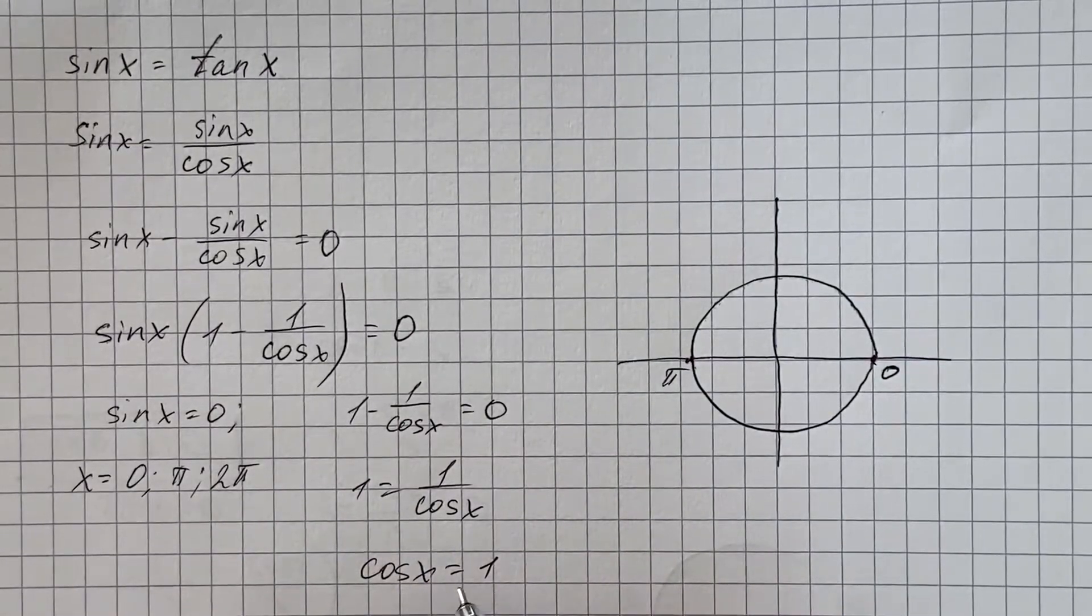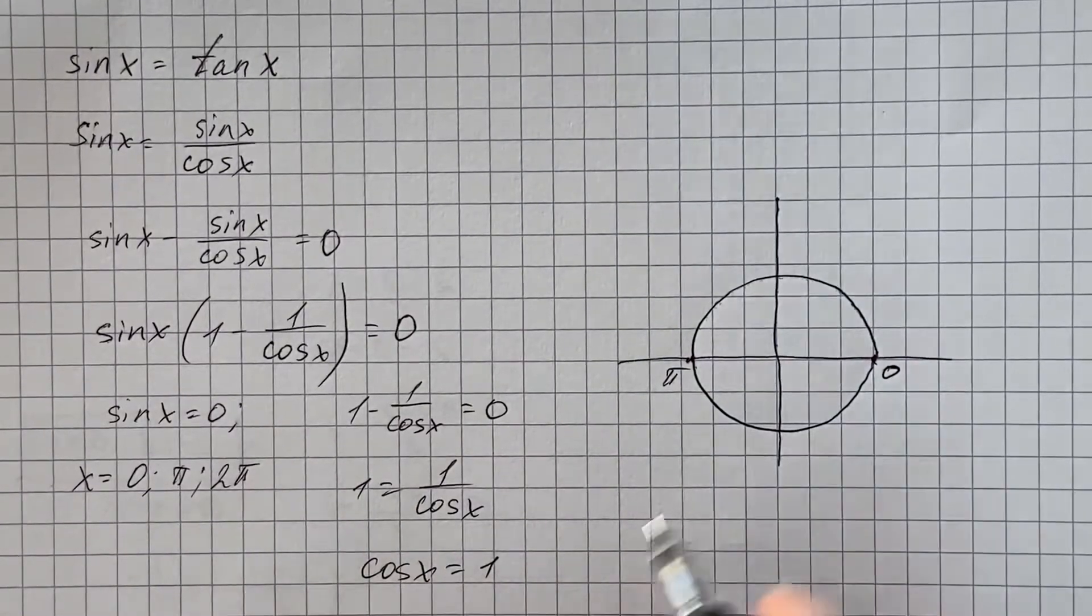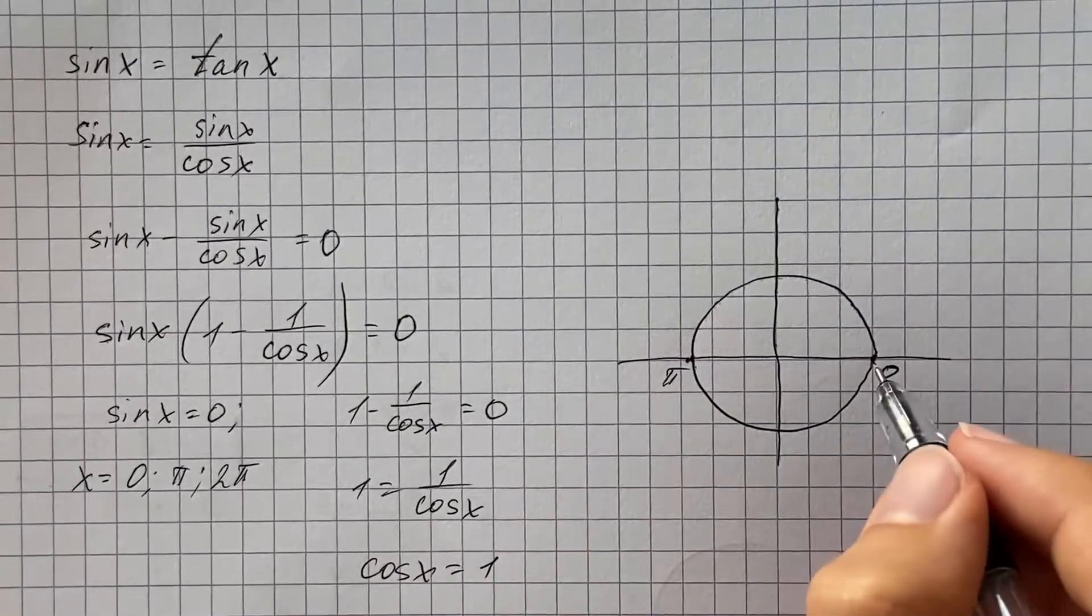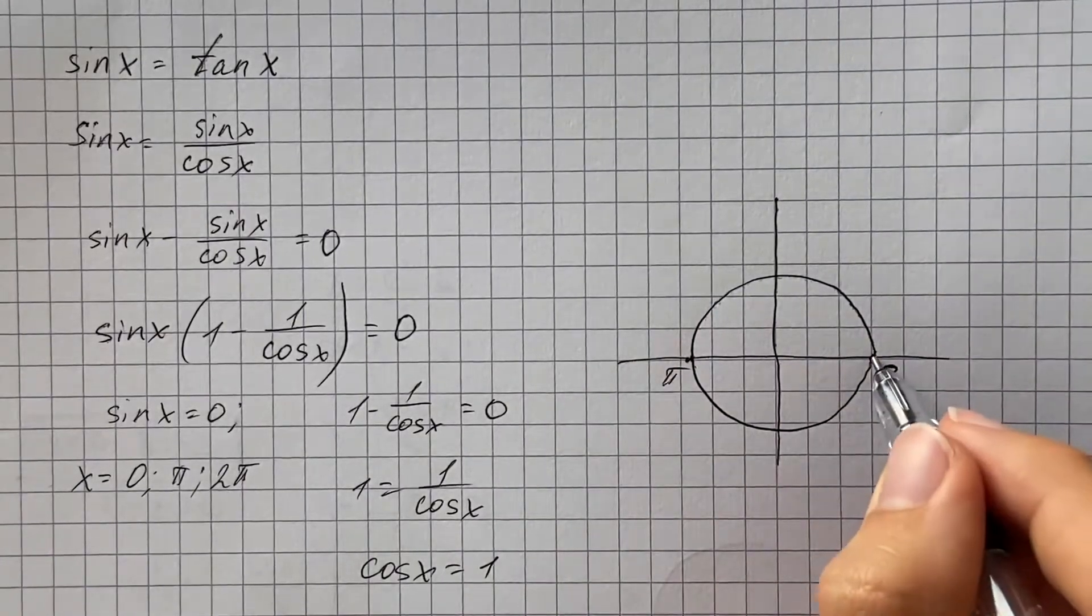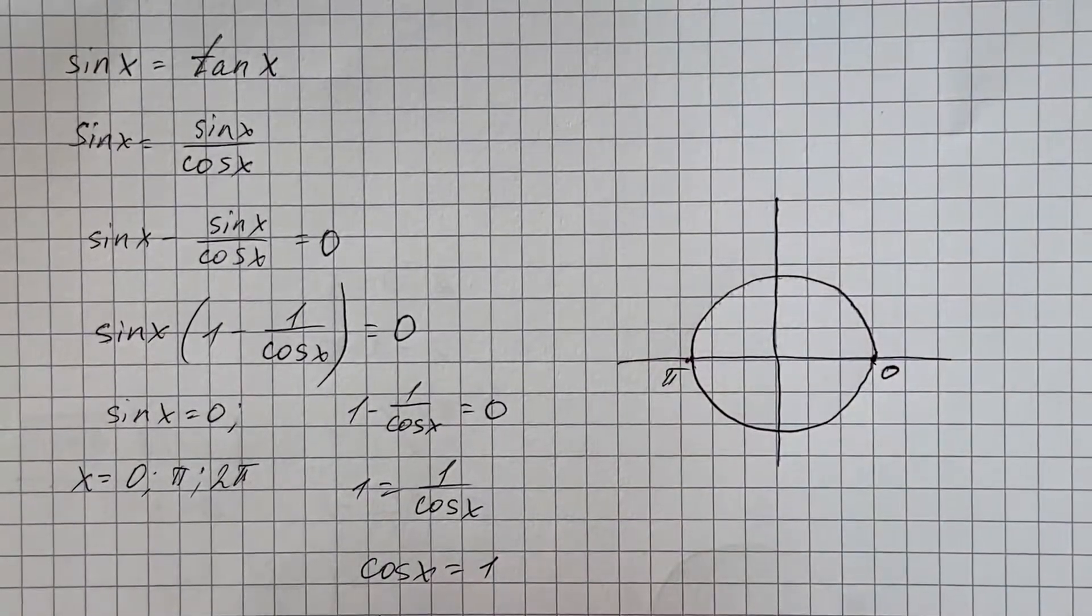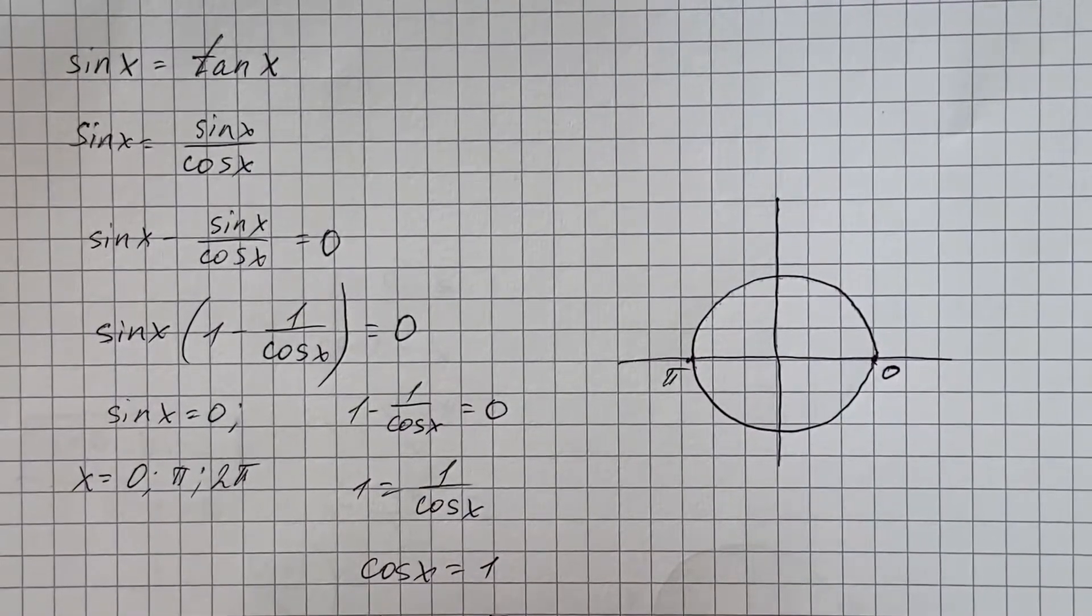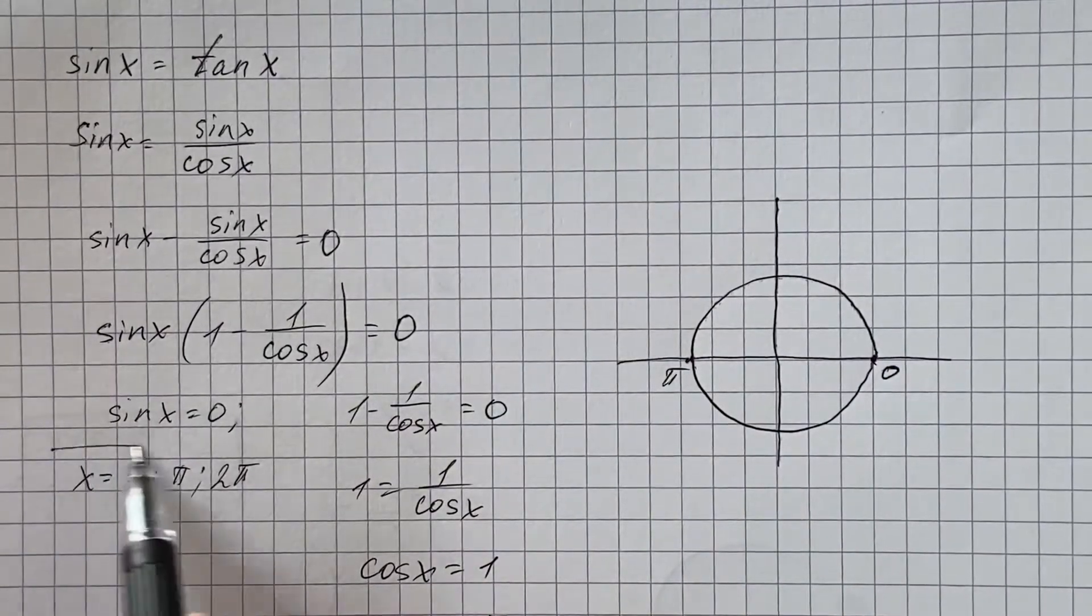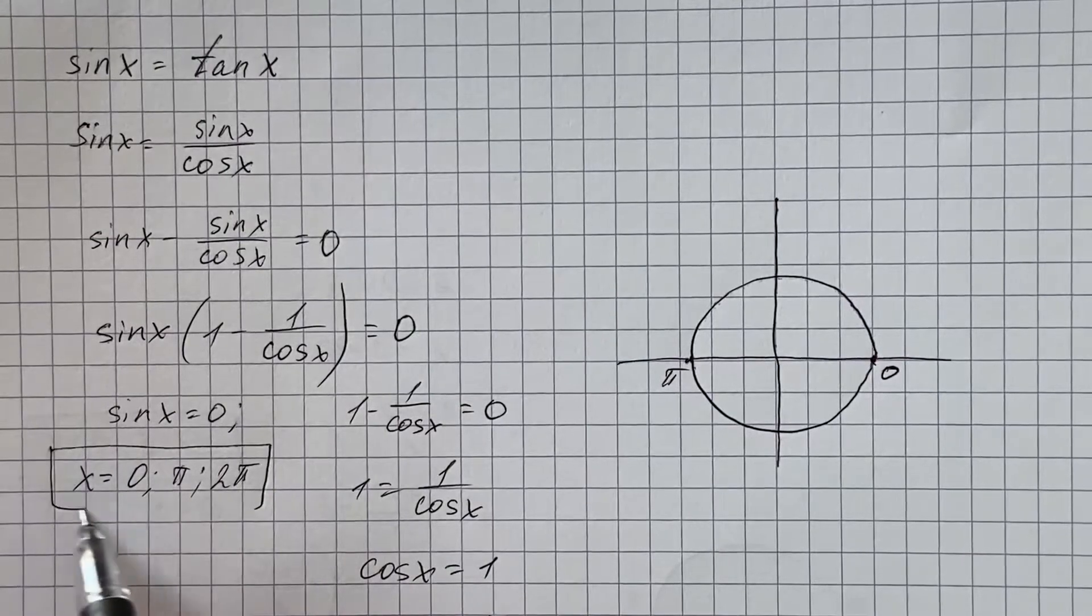And cosine of x equals 1, that's going to be the x value. So cosine equals 1 when the angle is 0 or 2 pi. So obviously our answer is going to be x equals 0, pi, or 2 pi.